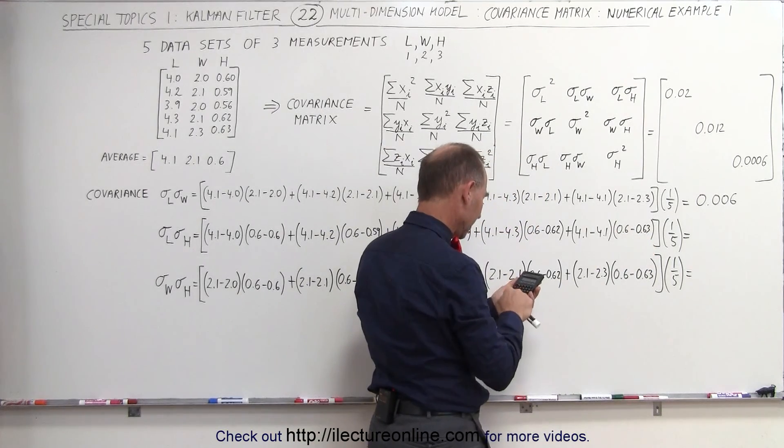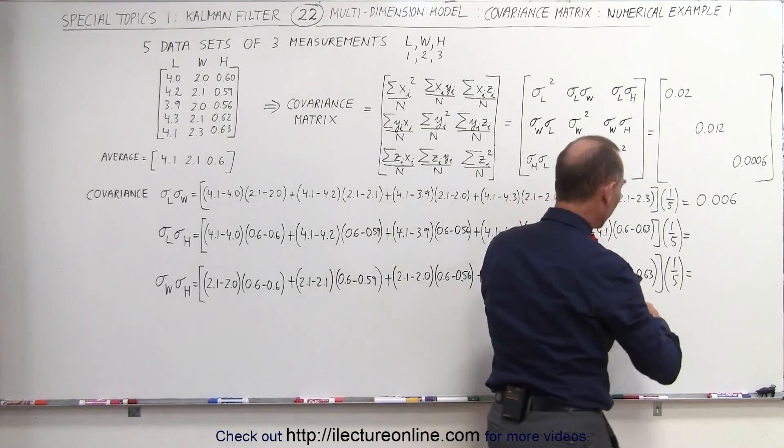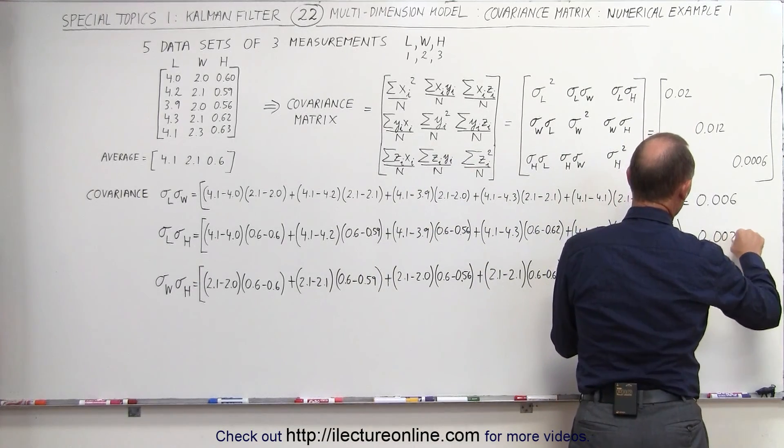Divide the whole thing by 5, and we get 0.0026.